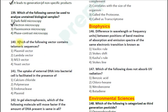Question number 140: Which of the following vectors contains telomeric sequences? Options: 1. plasmid vector; 2. lambda vector; 3. M13 vector; 4. yeast vector. The correct answer is option 4 — yeast vector.